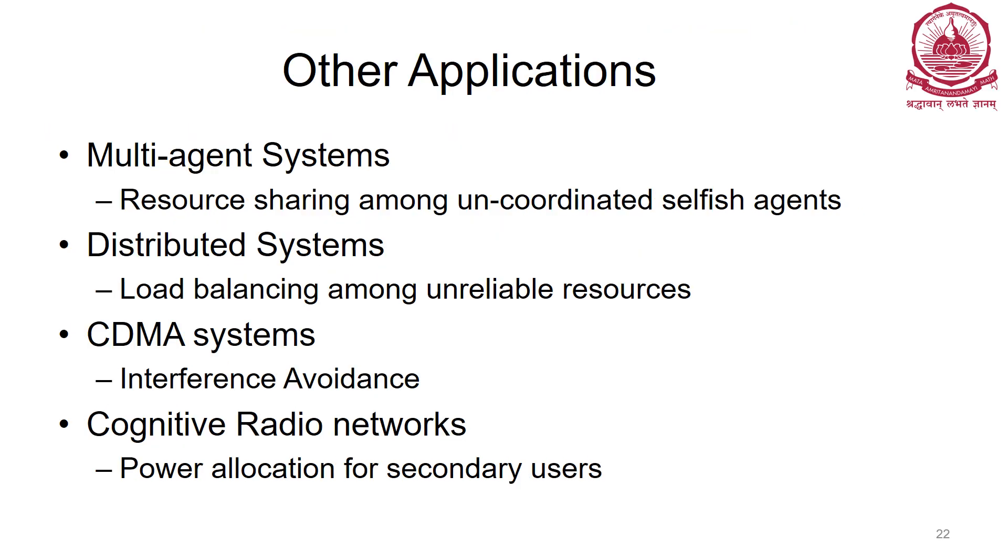There are a lot of applications in computer science and wireless networks - things like multi-agent systems for resource sharing, distributed systems and load balancing among unreliable resources, CDMA systems, cognitive radio networks. So interested people can go to Google Scholar, type congestion game and your area of research, you will get plenty of papers.